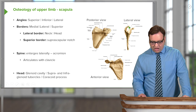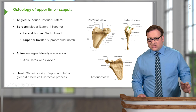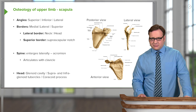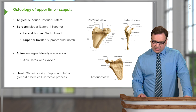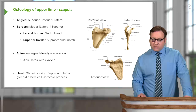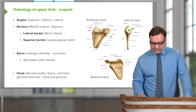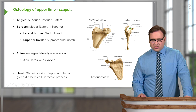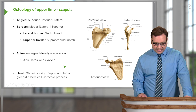The acromion is also significant because, as mentioned in a previous slide, the acromioclavicular ligament attaches from the acromion to the clavicle — we'll come back to that. The spine of the scapula articulates with the clavicle.